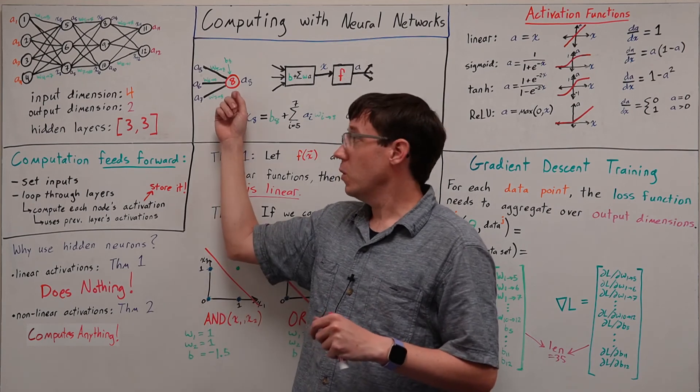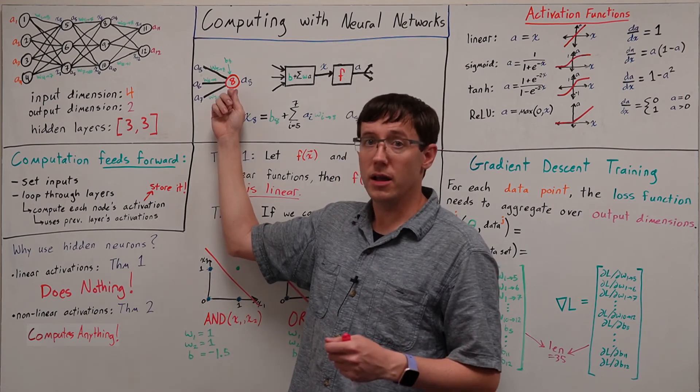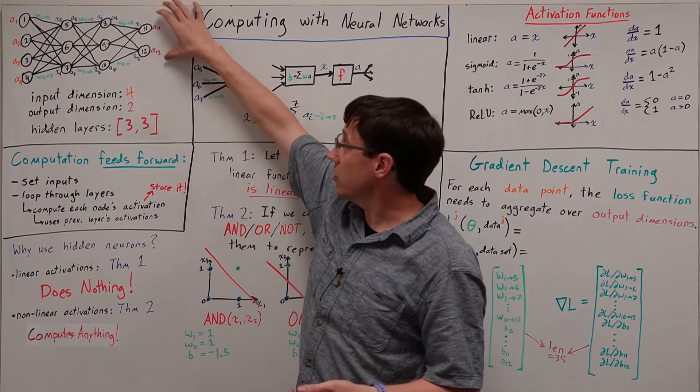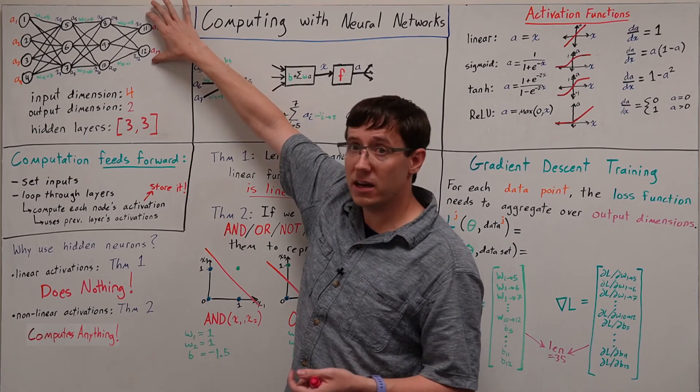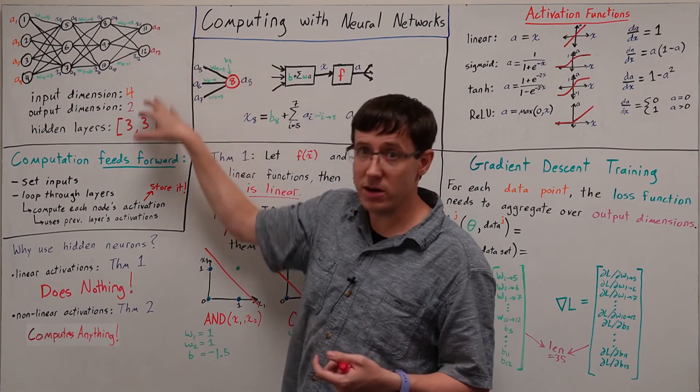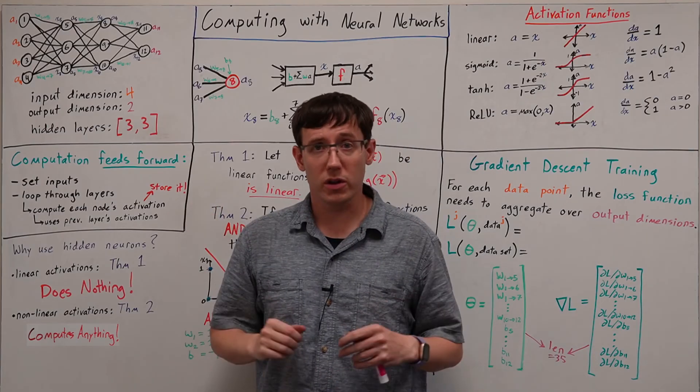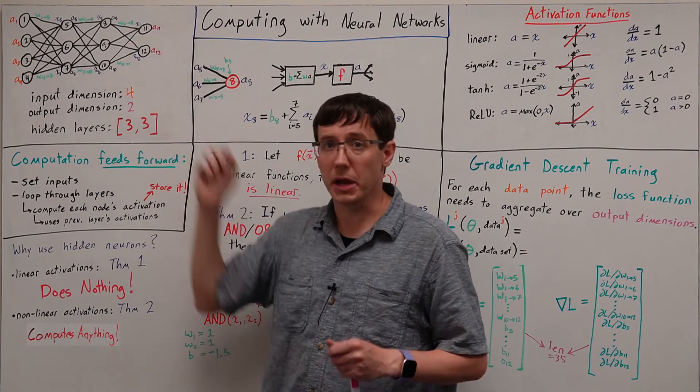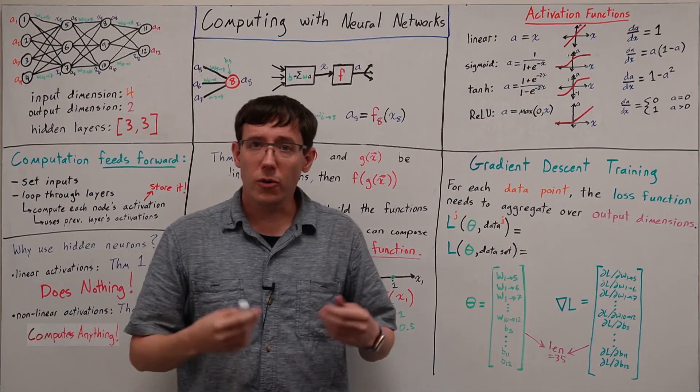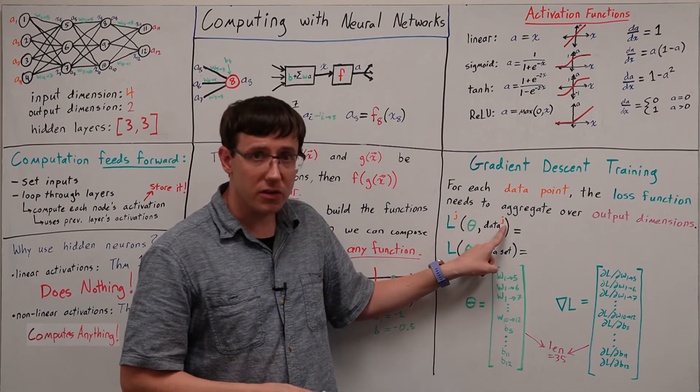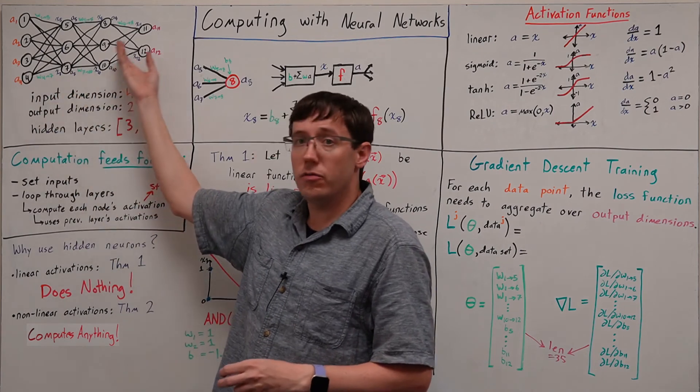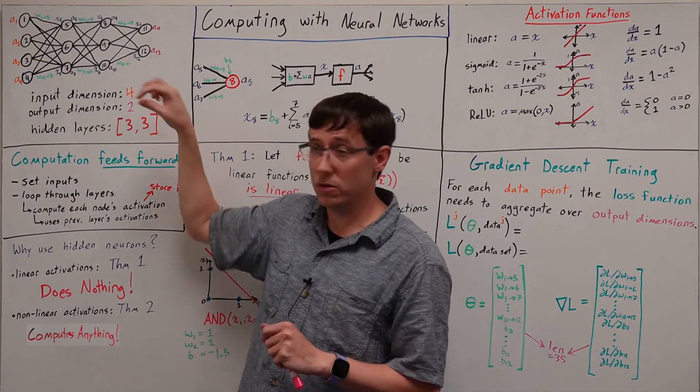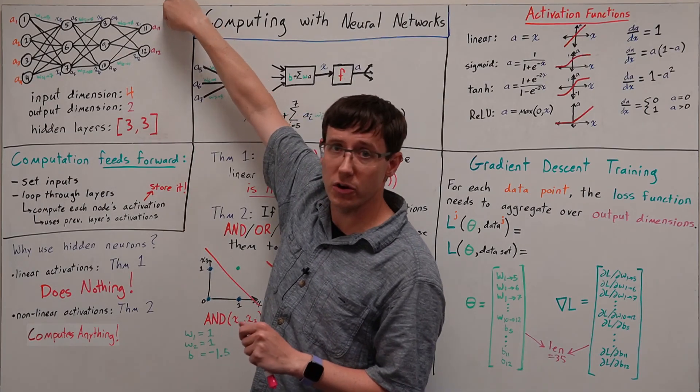In a single neuron model, we had a loss function that depended on the neuron's activation and the target. But now we need a loss function that incorporates the activation and the target for every neuron in the output layer. The first approach we'll consider for this is to generalize the mean squared error for a single neuron by simply summing over all the output neurons. So for any point j in the data set, the loss of the model on that point is the sum over the output neurons of the square difference between the target and the activation.